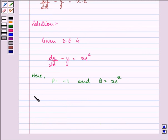So the integrating factor here will be e^(∫p dx) = e^(∫-1 dx) which is equal to e^(-x). Now multiplying integrating factor to find out the required solution...